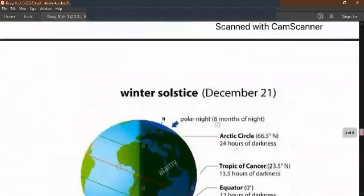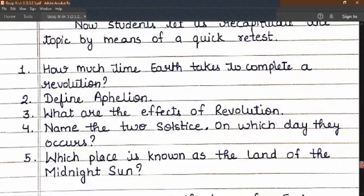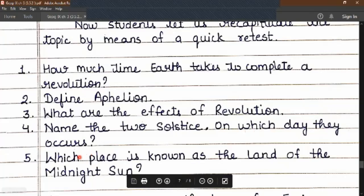So I will read out a few questions after which you may pause the lesson for 5 minutes. Your questions are: how much time earth takes to complete a revolution? Number two, define aphelion. Number three, what are the effects of revolution? Number four, name the two solstices and on which day they occur. Number five, which place is known as the land of midnight sun?